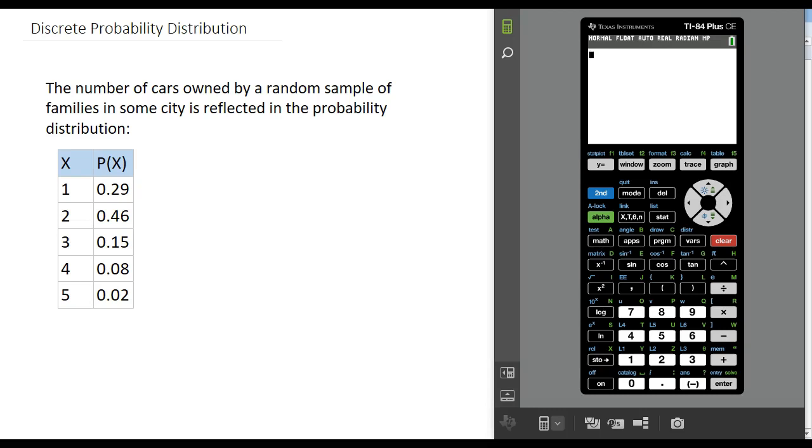The second column gives us the proportion of the sample who owned that many cars. To find the mean and standard deviation of this distribution, we're going to press the stat button and edit the lists. Press enter on option number one, and we'll type in both columns of data.